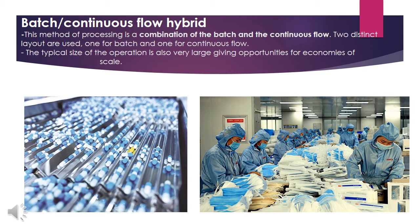Batch continuous flow hybrid. This method is a combination of batch and continuous flow. Two distinct layouts are used — one for batch and one for continuous flow. The typical size of operation is also very large, given opportunities for economies of scale. Best examples are the production of medicines, vaccines, and masks.